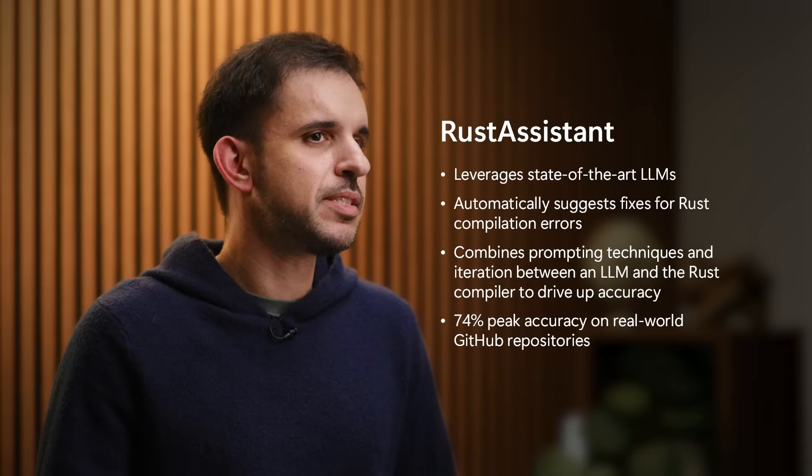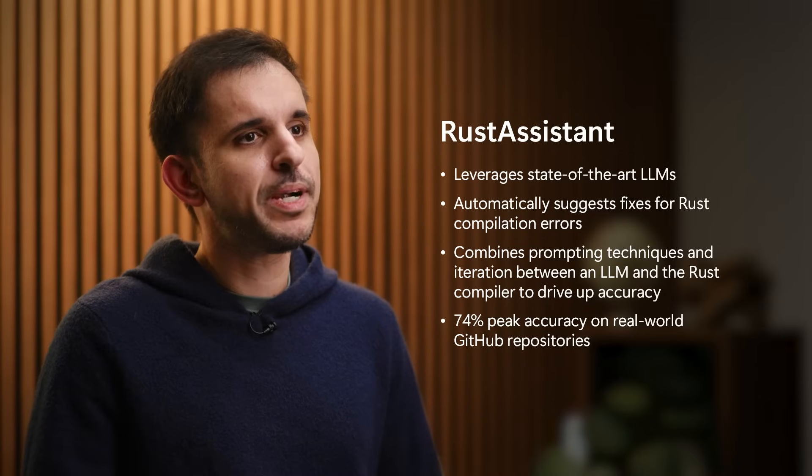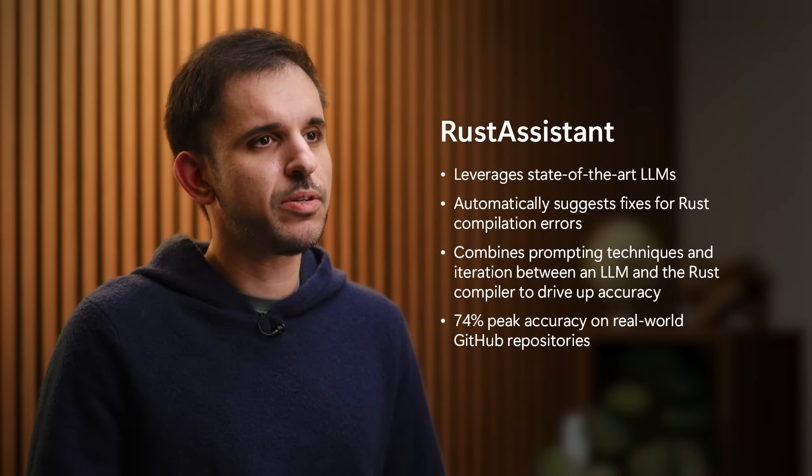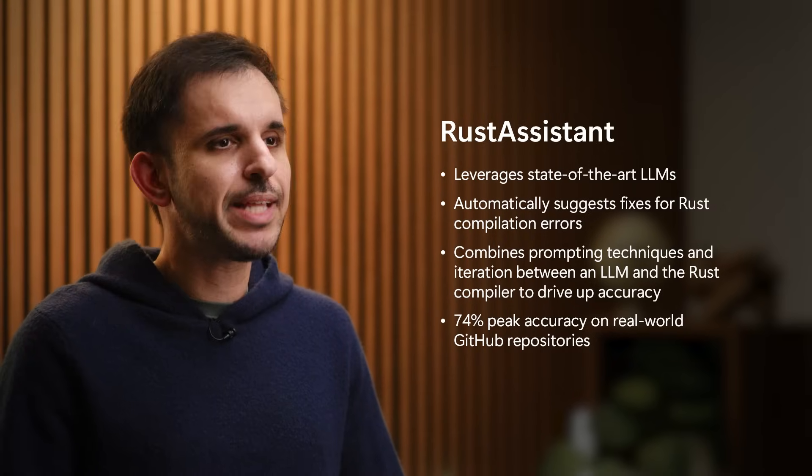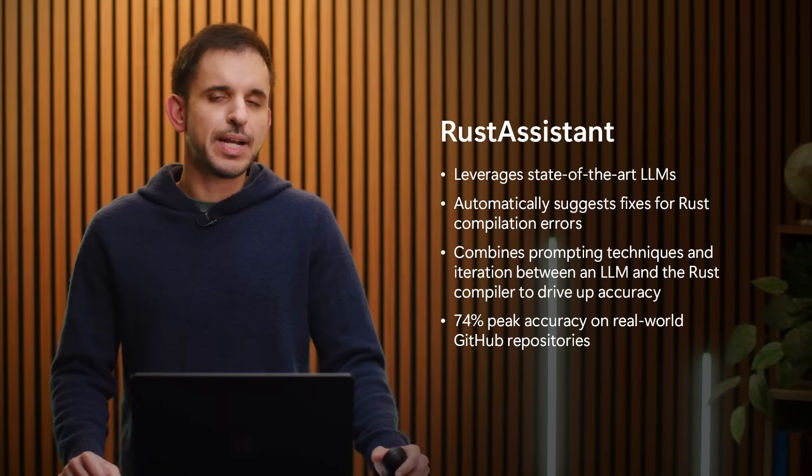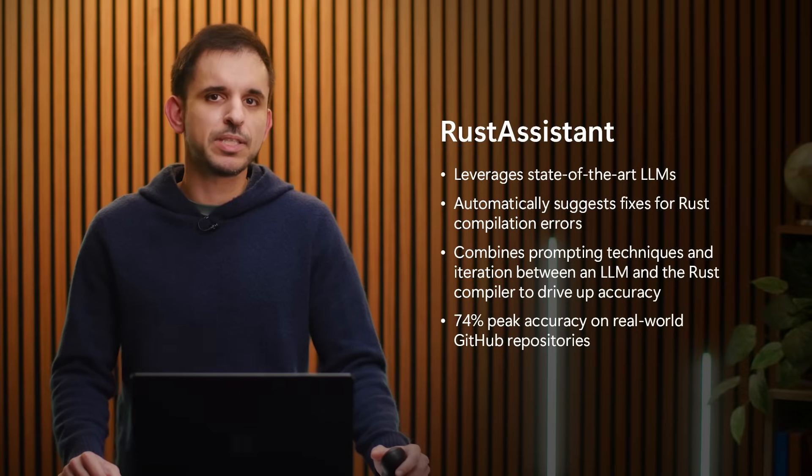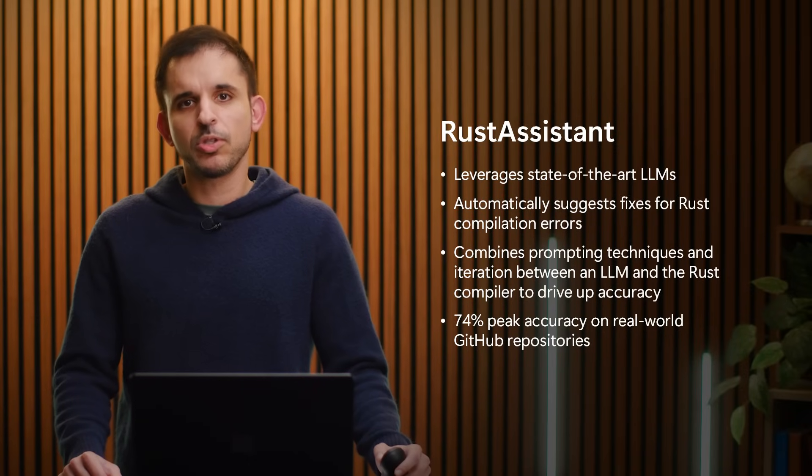At the same time, Rust is becoming increasingly more popular every year, so as more and more developers adopt Rust for writing critical software systems, it is essential to tackle the difficulty in writing code in Rust. In Microsoft Research, we created a tool called Rust Assistant that leverages the power of state-of-the-art LLMs to help developers by automatically suggesting fixes for Rust compilation errors. Our tool uses a careful combination of prompting techniques, as well as iteration between a large language model and the Rust compiler to deliver high accuracy of fixes. Rust Assistant is able to achieve an impressive peak accuracy of roughly 74% on real-world compilation errors in popular open-source Rust repositories on GitHub.